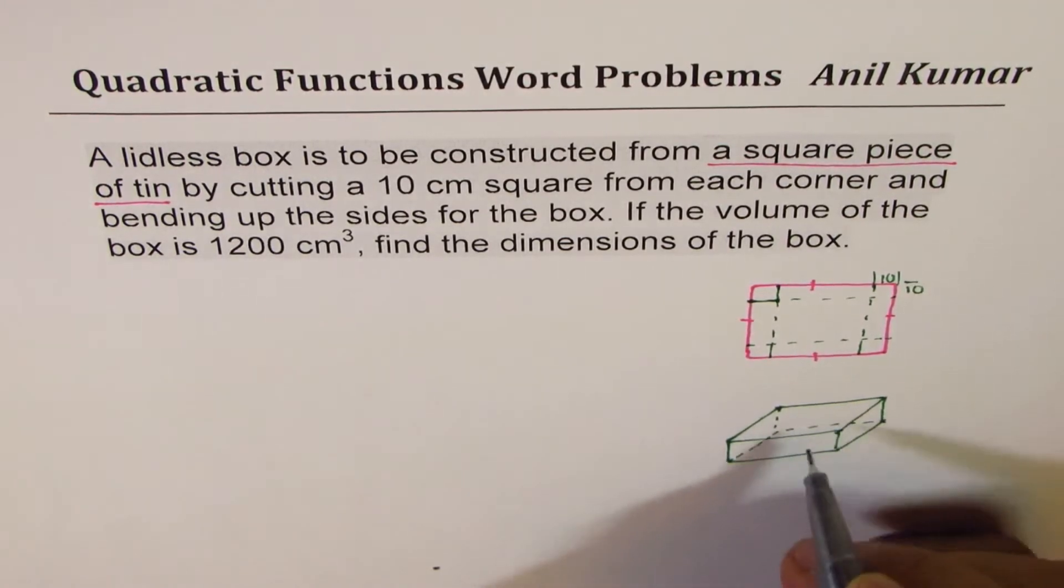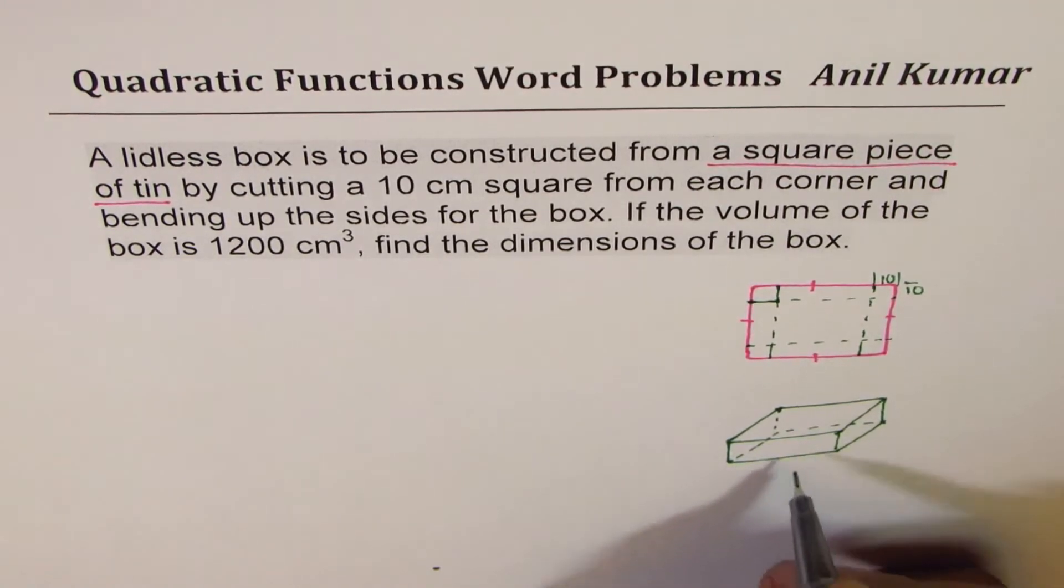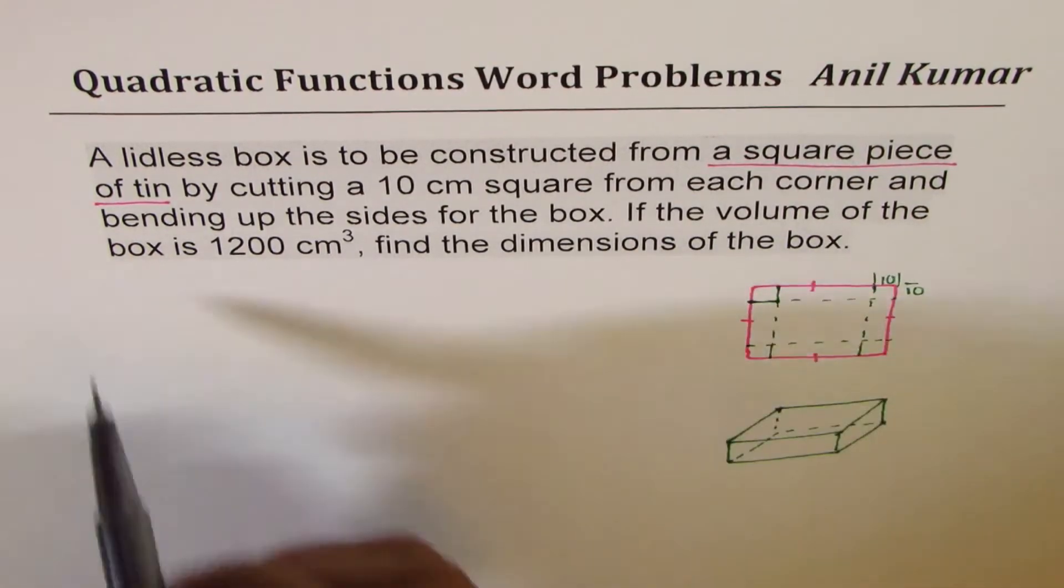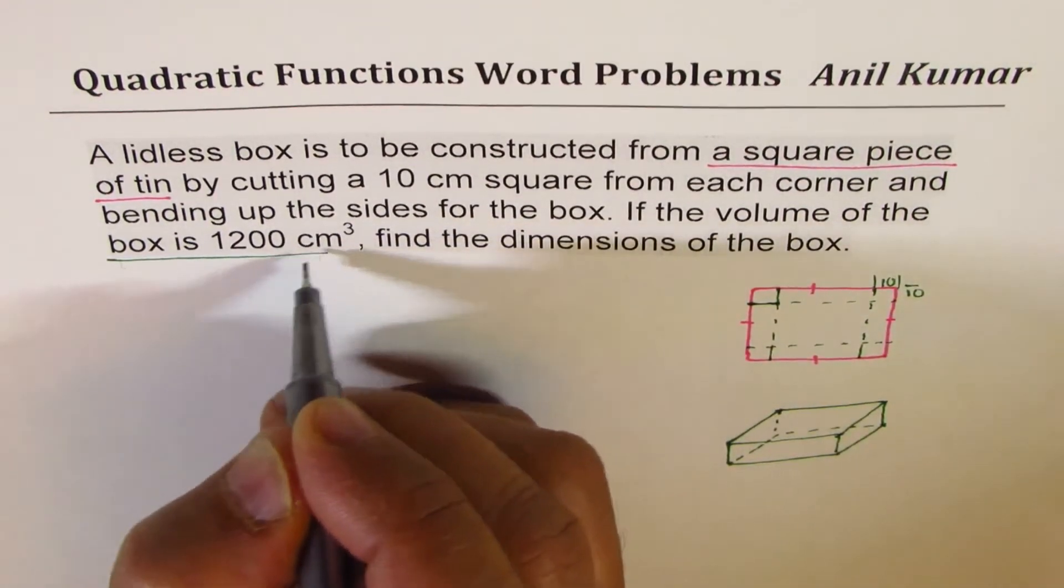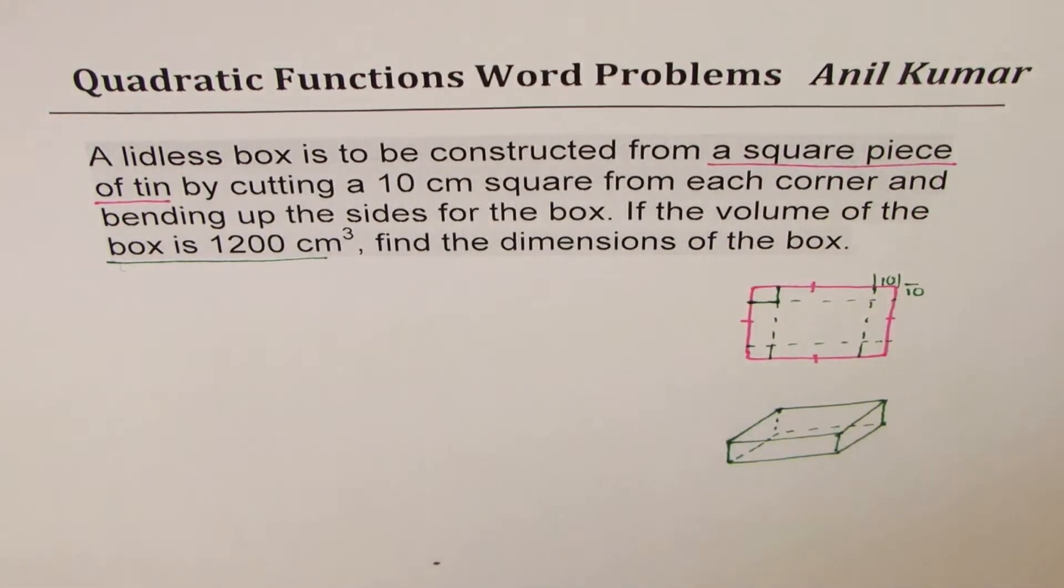So we're talking about this box. Now it says if the volume of the box - so the volume of the box is given to us, so what we will do here is while defining the variables we'll give variables for length and width of the box.